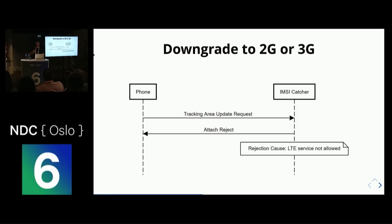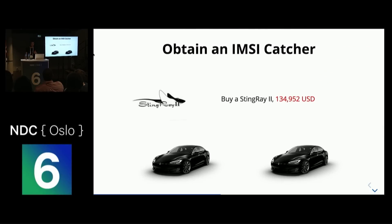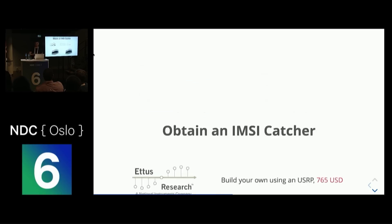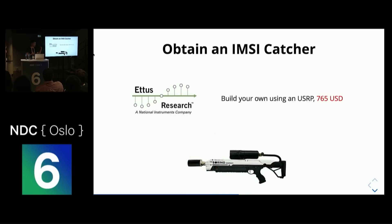If you want to try this attack yourself and want an IMSI catcher, you have two choices. The first is to buy a Stingray 2 — basically an IMSI catcher out of the box. The problem is you have to work for the FBI to actually buy one, and the price is almost $135,000 US dollars, which in Norway is the equivalent of two Tesla S. But if you still want an IMSI catcher, you have an alternative: build your own using a USRP, a radio peripheral, which costs $765 US dollars — the equivalent of Elon Musk's flamethrower. You probably have more fun with the flamethrower than the Teslas.